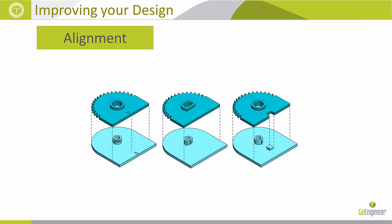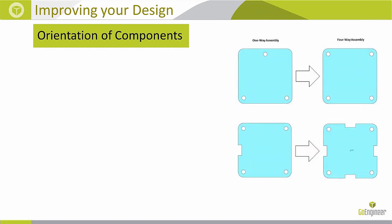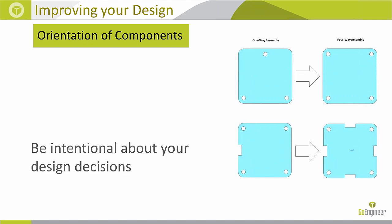Orientation of components requires intentional design decisions. Sometimes you want a part to attach only in one specific manner with no other possibilities. Other times you want to give the end user multiple possibilities, so you must think about this from an assembly perspective — what experience do you want for your customer?